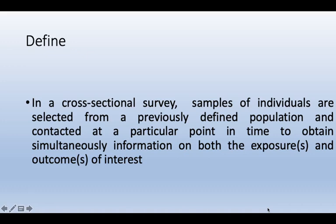By definition, in a cross-sectional survey study, samples of individuals are selected from a previously defined population and contacted at any particular point in time to simultaneously collect information on both the exposure and the outcome of interest. So at any particular time point we collect that information and assess the frequency of that exposure in the prevailing population. That is the simplest form of cross-sectional survey study.